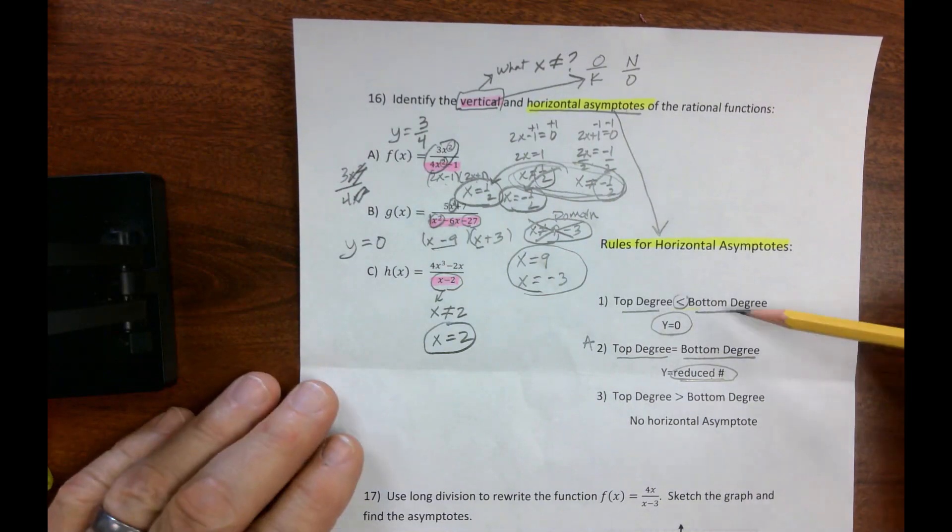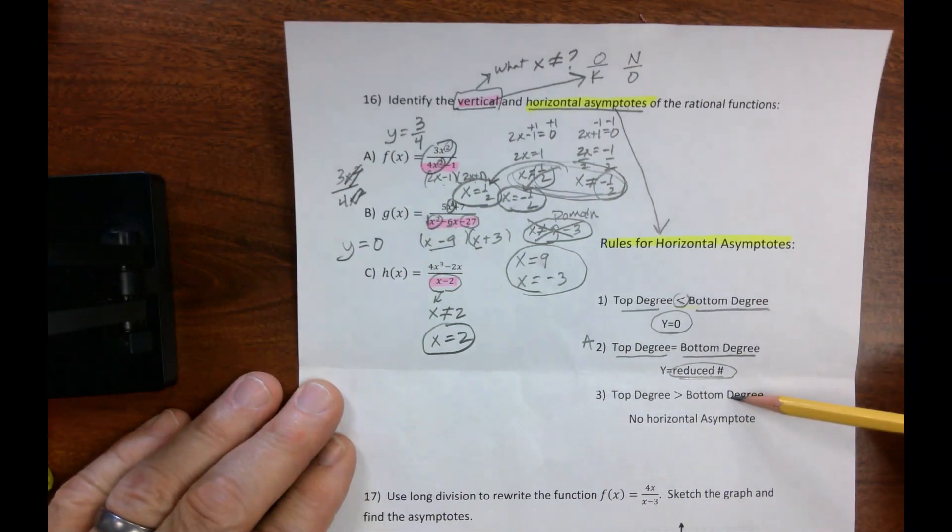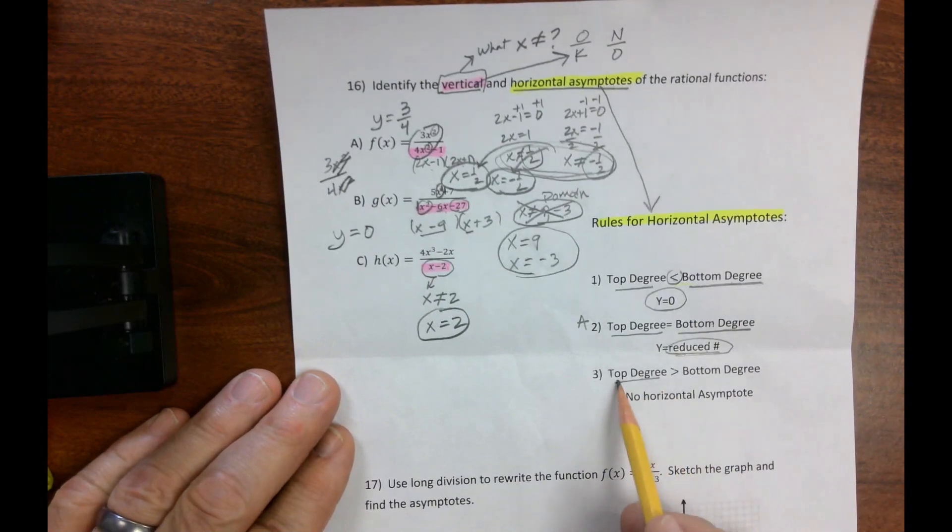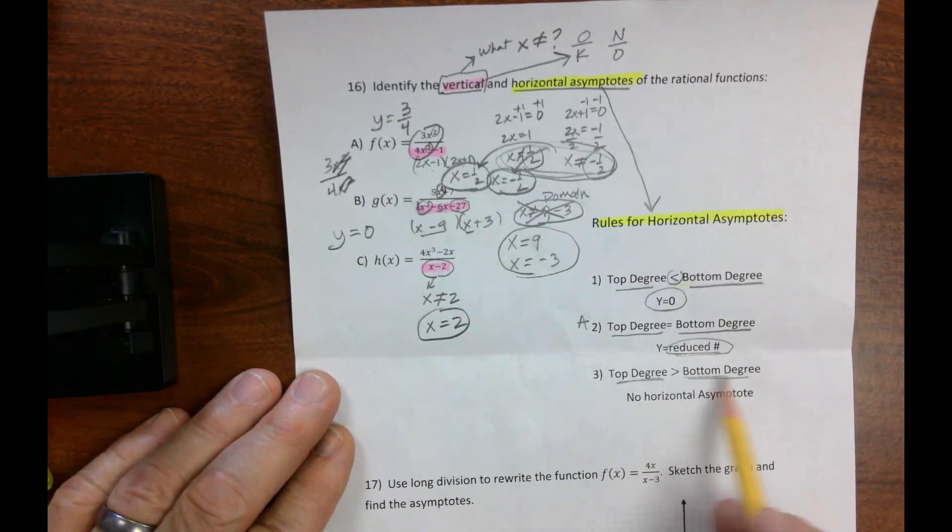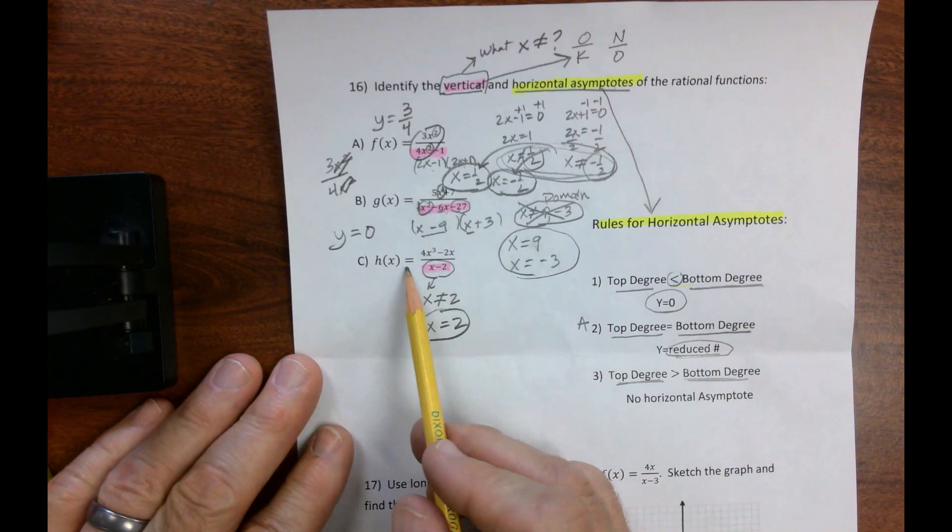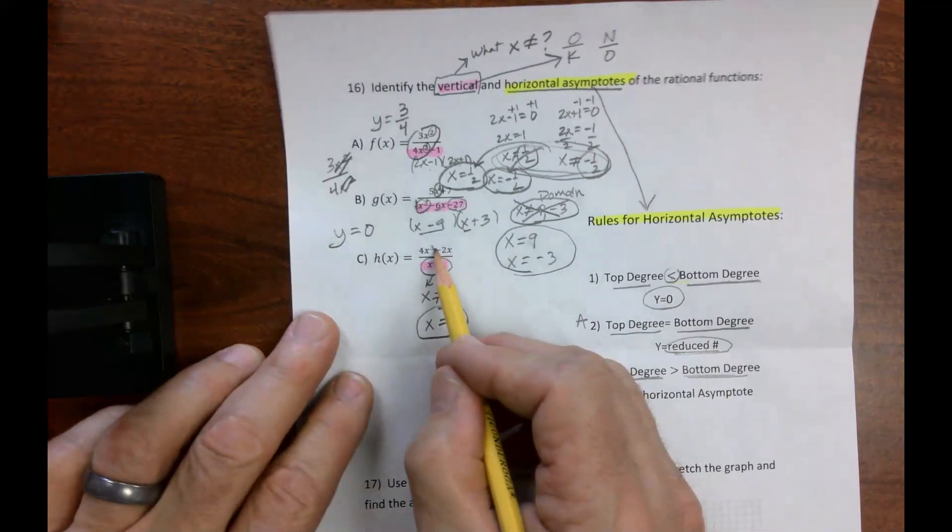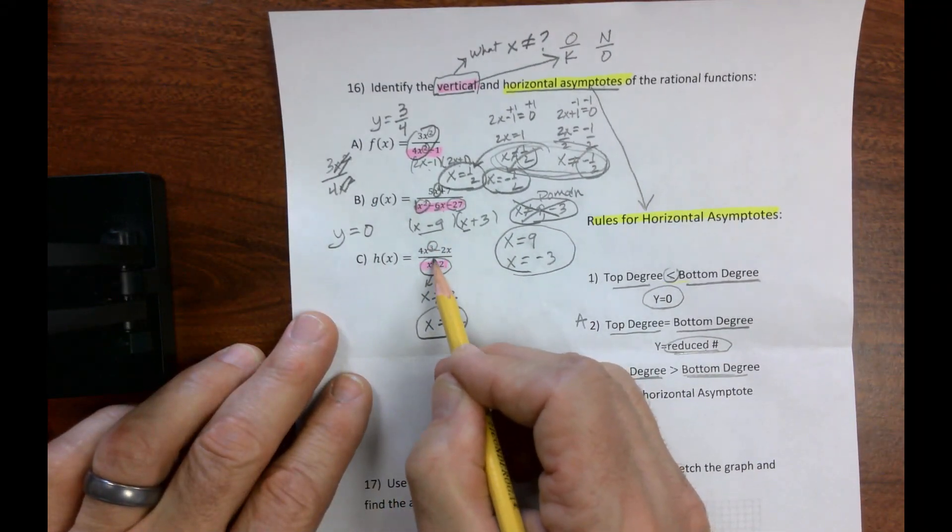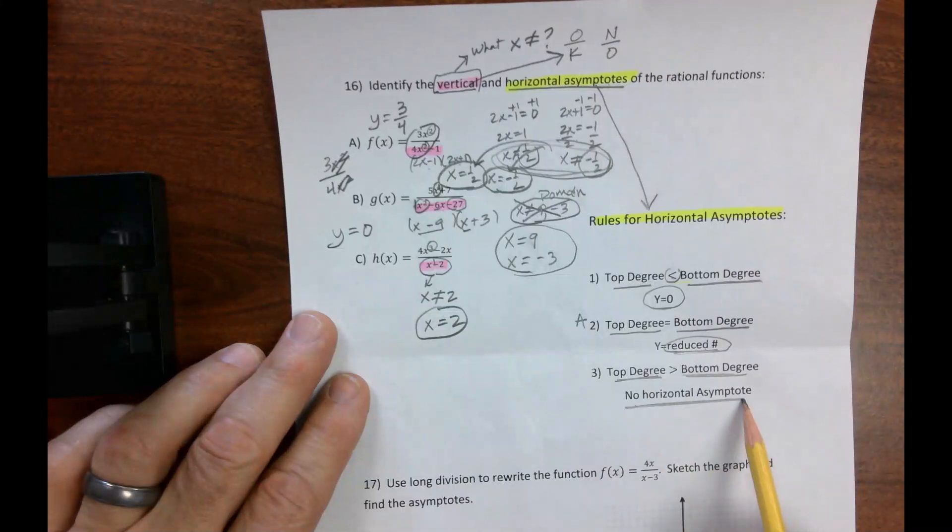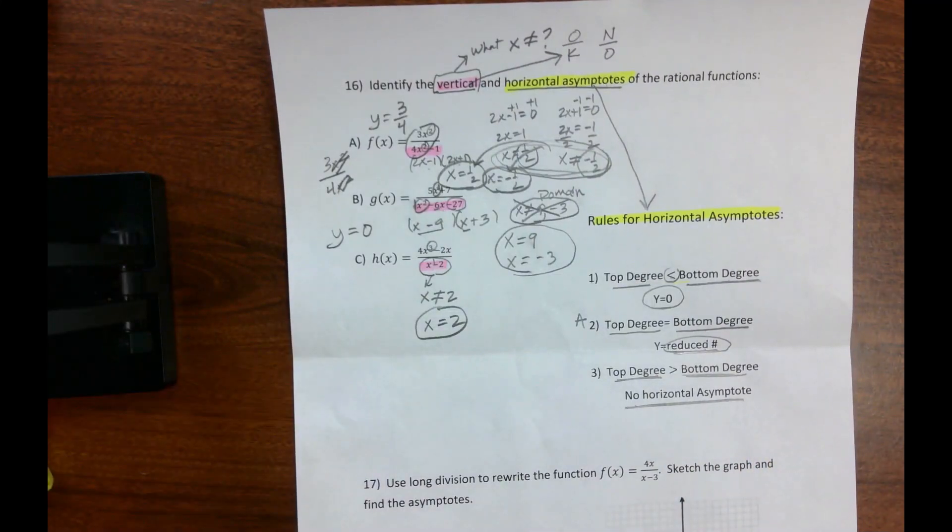But this is what you're supposed to be doing during your test, using these rules. Last one, where does the top degree, where is it greater than the bottom degree? We look at letter c. The top degree, which is a 3, is bigger than that 1. That means there is no horizontal asymptote. So there's number 16.